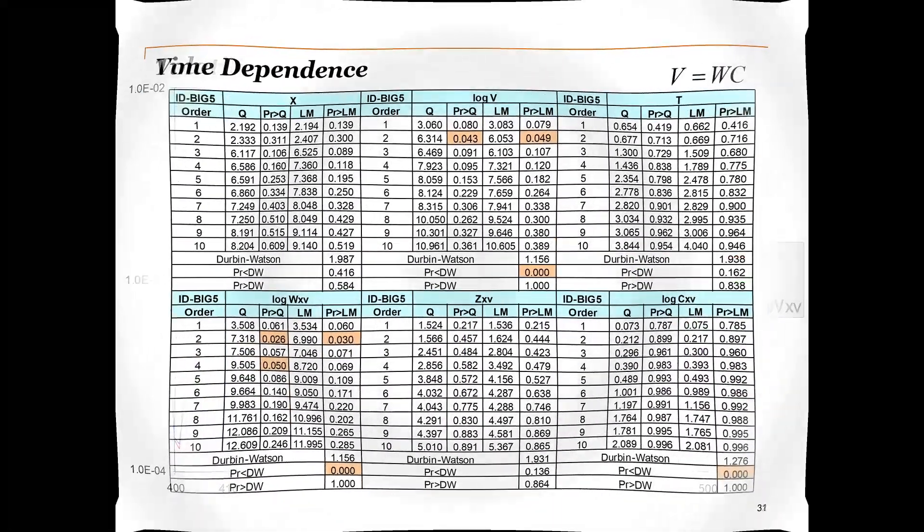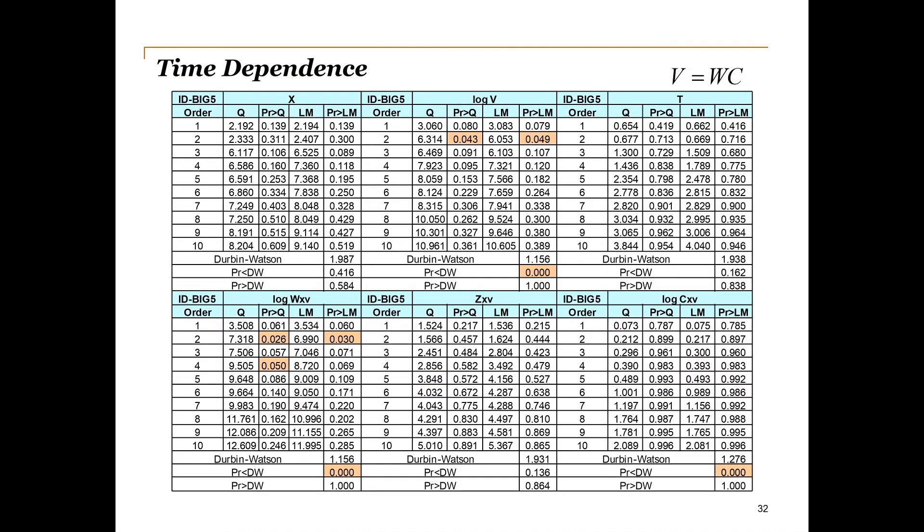However, there is still one problem with our model fit. Looking at the Durbin-Watson test, we see that there is autocorrelation present in W, V and C. This goes against our current model assumptions of independence over time. Examining the autocorrelation, we see the following.